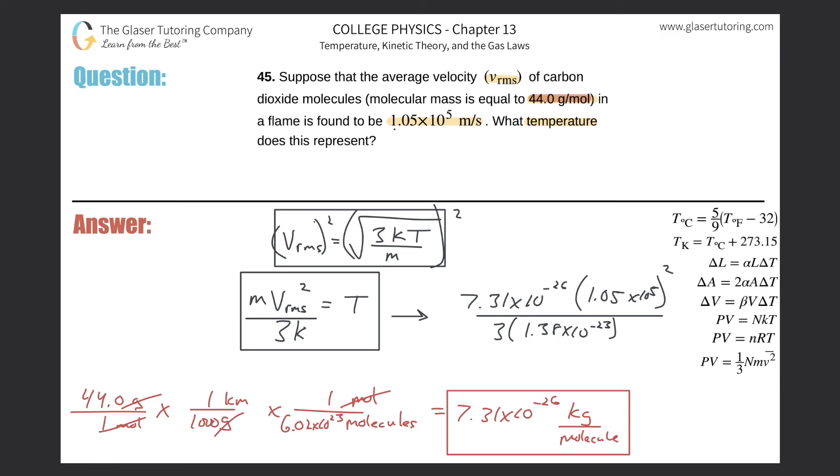Hold on, I forgot my parentheses in the denominator. Otherwise the calculation is going to come out wrong. Here it looks like I get a value of about 1.95 times 10^7, and that is in kelvin since we solved for the temperature.